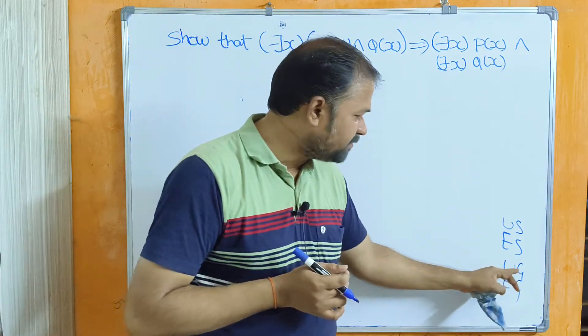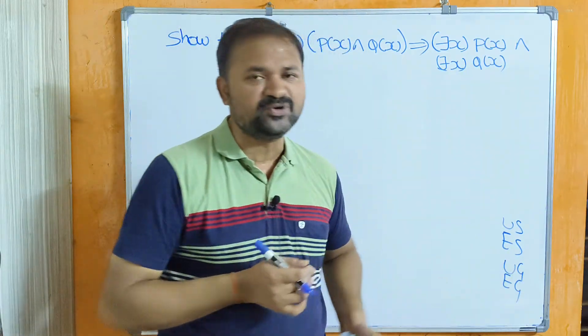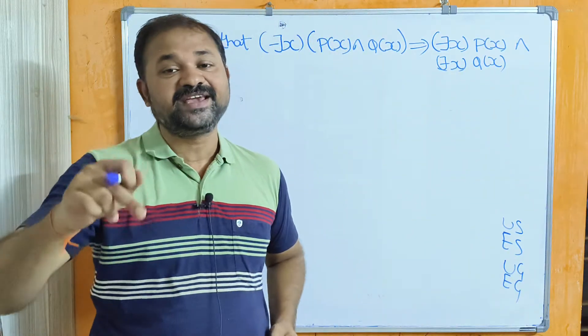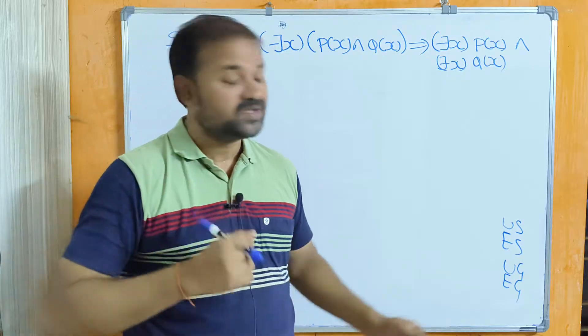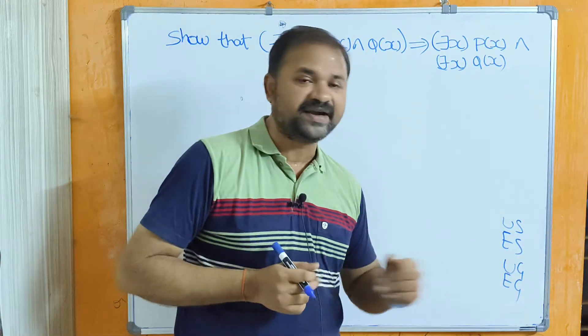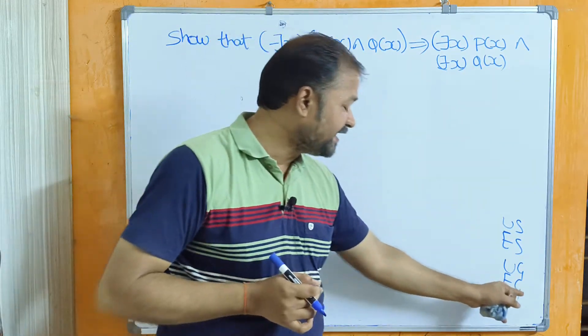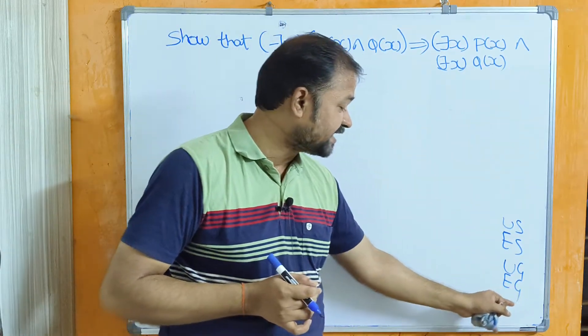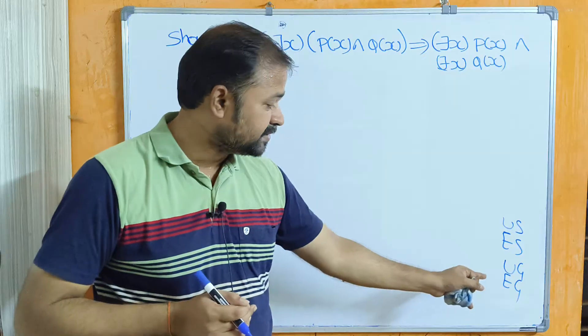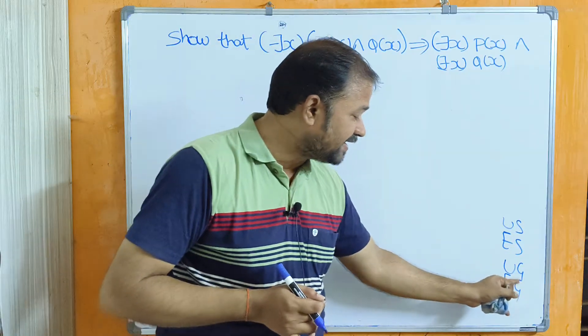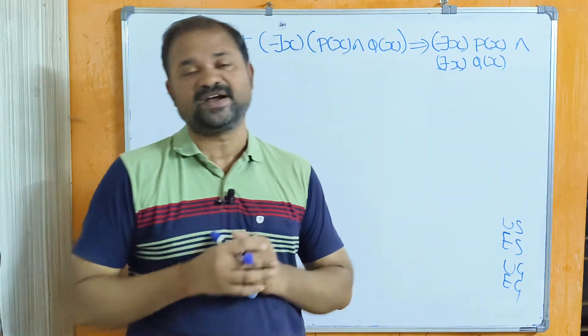With the help of Rule UG we can add the universal quantifier. With the help of the existential generalization rule, Rule EG, we can add the existential quantifier.